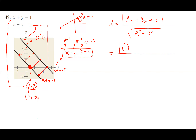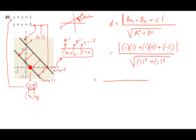So we're going to plug in: a value one times x-one one, plus b value one times y-one zero, plus c value negative five — all in absolute value — over the square root of a value one squared plus b value one squared. Let's simplify: one times one is one on top, that's zero, plus negative five. One squared is one plus one more is two. We have a square root, and one plus zero minus five is negative four. The absolute value of negative four is positive four.